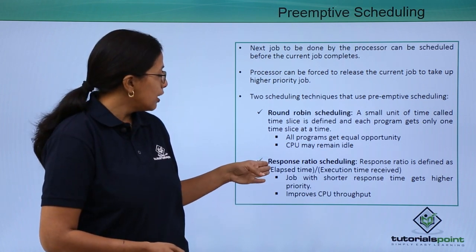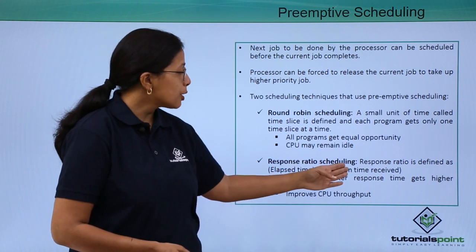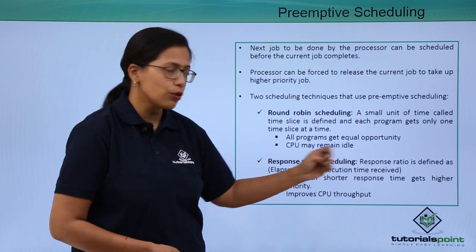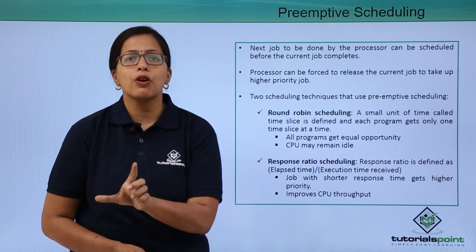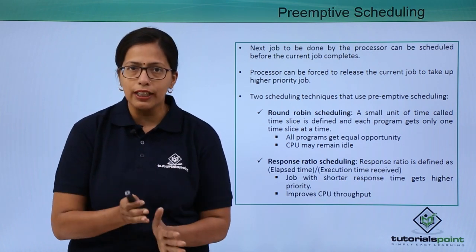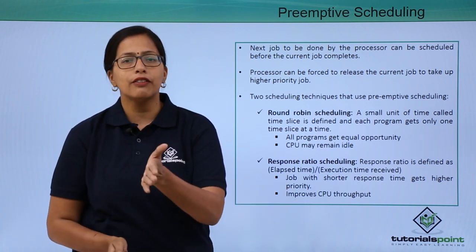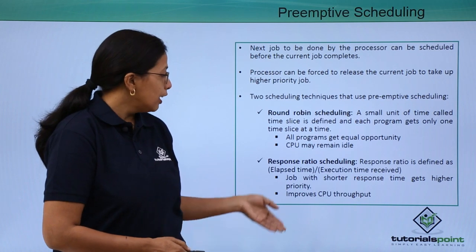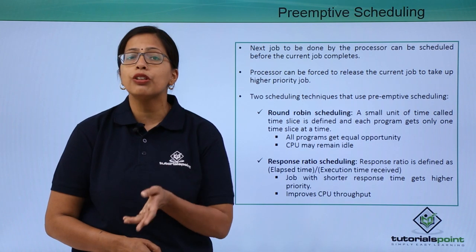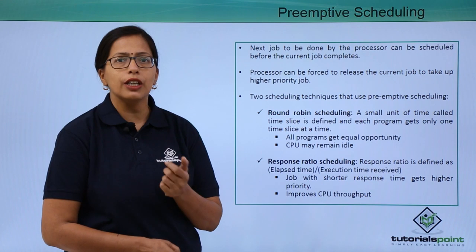Next is response ratio scheduling. The response ratio, as discussed earlier, is elapsed time divided by execution time. The job with the shorter response time gets priority — if a job can be finished quickly, it will be done first; if a job will take longer, it will be done later. This improves CPU throughput, and as discussed, maintaining throughput is very important. These are the two types of preemptive scheduling.